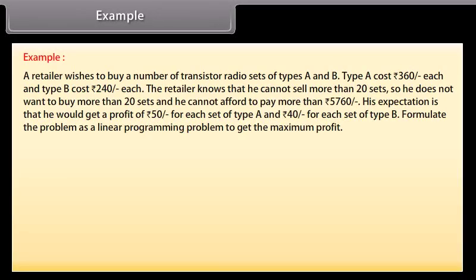Example: a retailer wishes to buy a number of transistor radio sets of types A and B. Type A costs Rs. 360 each and type B costs Rs. 240 each. The retailer knows he cannot sell more than 20 sets, and he cannot afford to pay more than Rs. 5760. His expectation is a profit of Rs. 50 for each set of type A and Rs. 40 for each set of type B. Formulate the problem as a linear programming problem to get the maximum profit.